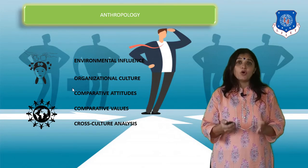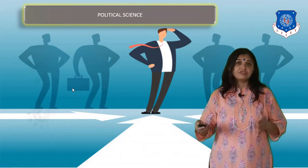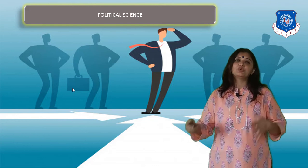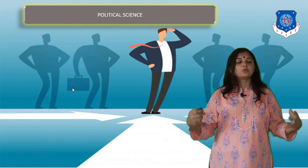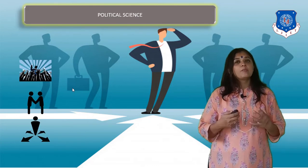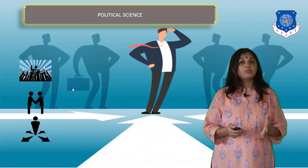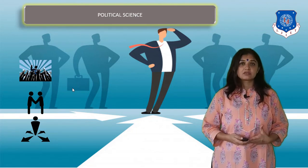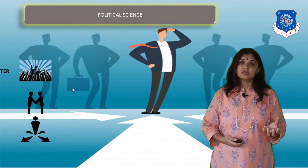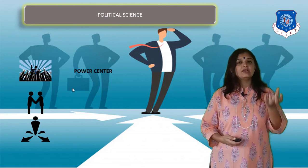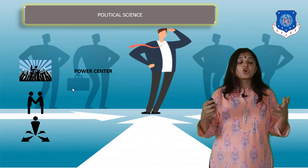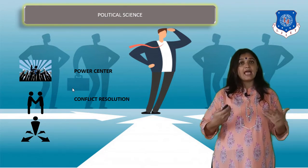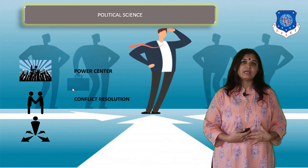Political science is also a very important contributing field to organizational behavior, because wherever human beings work together in a group, politics is bound to happen. It talks about power centers — who will be powerful over others or who can influence others — conflict resolution between people, and the allocation of power within the organization.